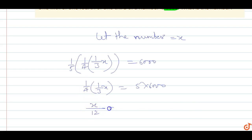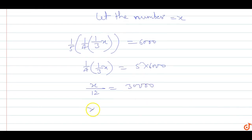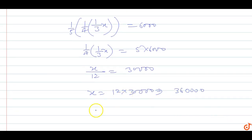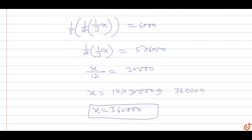So X by twelve equals thirty thousand. Therefore X equals twelve into thirty thousand, which equals three lakhs sixty thousand. So the number is three lakhs sixty thousand.